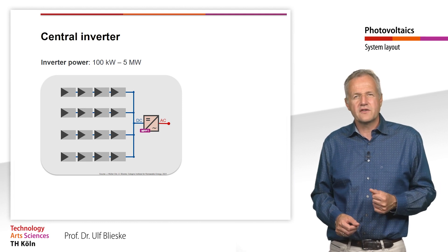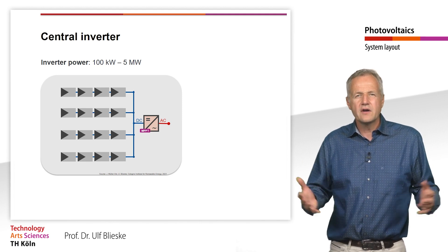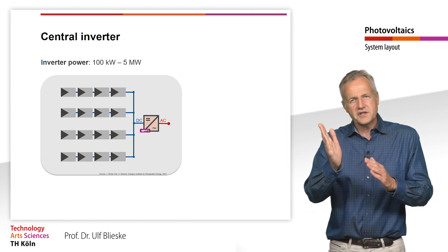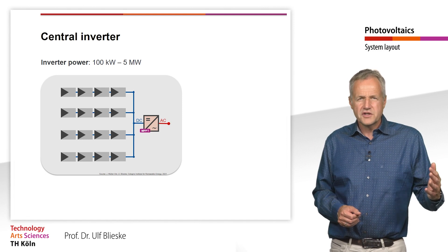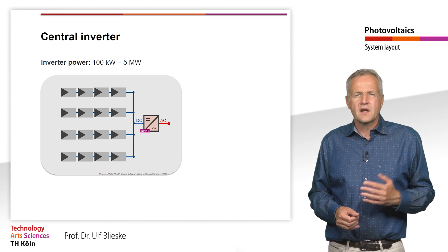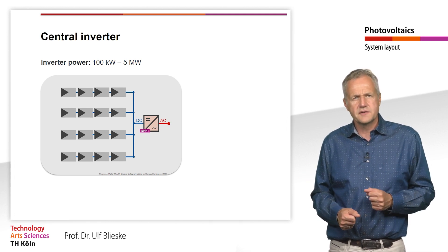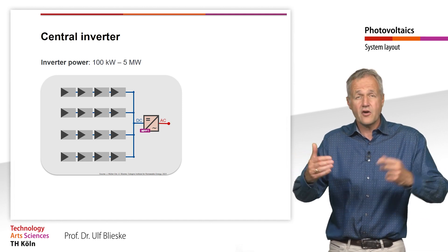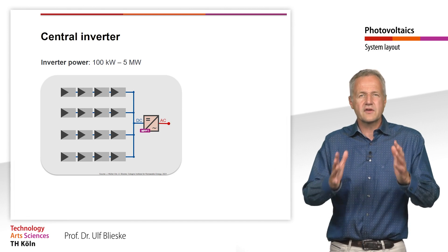This naturally leads to mismatch losses, which are higher compared to a system with many multi-string inverters. However, a system of this size is usually a ground-mounted system on which all modules have the same orientation. The mismatch between modules here is mainly due to the electrical parameters, voltage drops in the line and the partial shading or soiling of the modules. The relative losses due to mismatching are usually in the range of 1-3% for a central inverter. In addition, the probability of inverter failure increases with each electronic component. As a result, a plant with many inverters has a higher overall risk of failure than a plant with a single inverter.